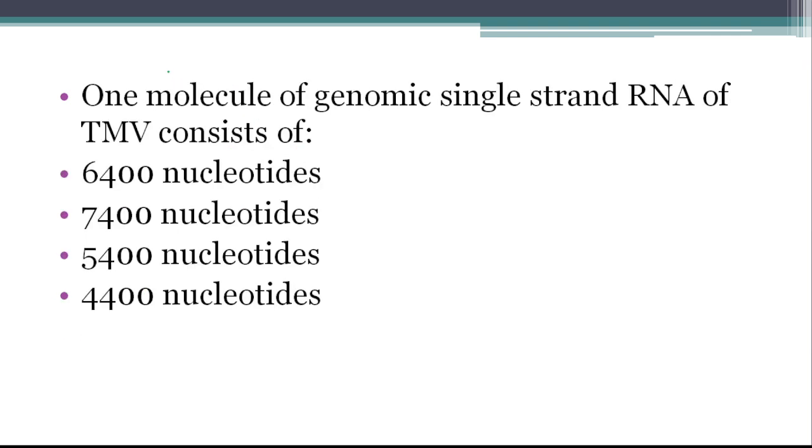Next question we have studied. One molecule of genomic single-stranded RNA of TMV consists of, you know TMV which is Tobacco Mosaic Virus. Time and again we have been studying it. It is a single-stranded RNA genome, and in that genome there are 6400 nucleotides. So our correct answer is 6400 nucleotides.